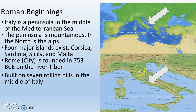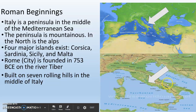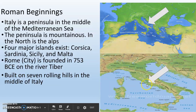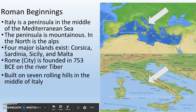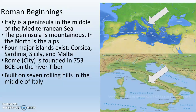We're going to notice that there are lots of mountains, lots of rivers, and much like Greece, lots of islands. Four major islands are Corsica, Sardinia, Sicily, and Malta. Rome, the city, is founded on the River Tiber in 753 BCE. We've talked about why it's important to be founded on a river — you need water for your crops. It's also built on seven rolling hills, because it's easy to defend a hill — you can throw spears down or shoot arrows down with gravity helping you.